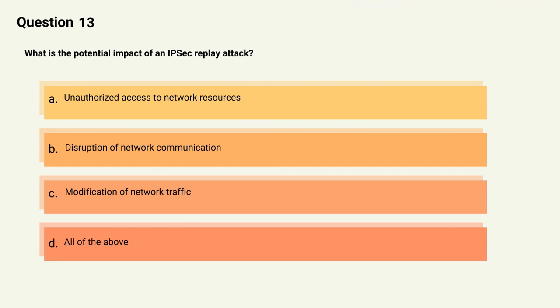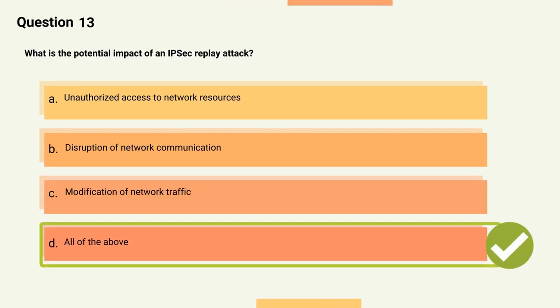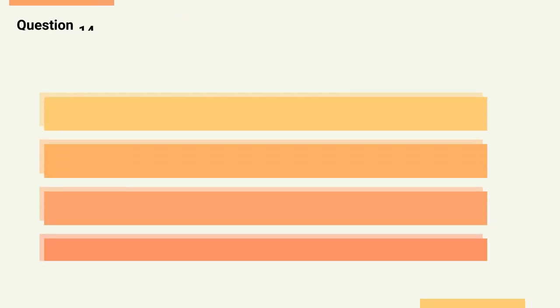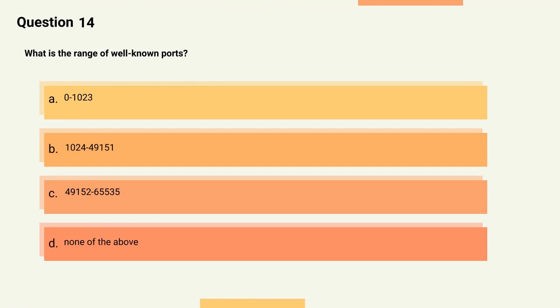Question 13: What is the potential impact of an IPSec replay attack? Options: A) Unauthorized access to network resources, B) Disruption of network communication, C) Modification of network traffic, D) All of the above. The correct answer is Option D, all of the above. Explanation: An IPSec replay attack can have a range of impacts on a network, including unauthorized access, disruption of communication, and modification of traffic.